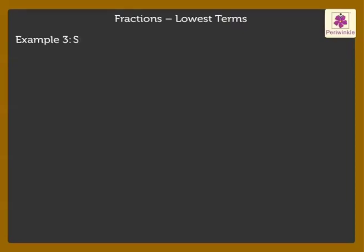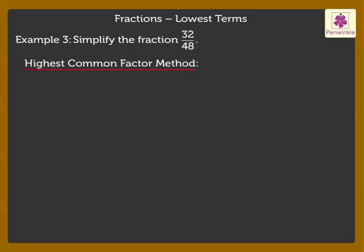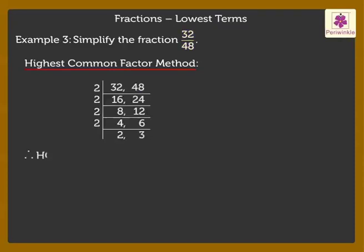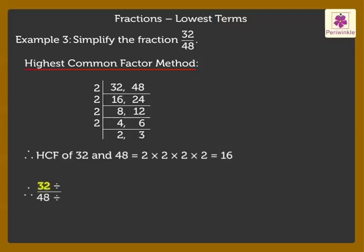Example 3: Simplify the fraction 32 upon 48. We will solve this by the HCF method. Firstly, find the HCF of the numbers 32 and 48. The HCF of 32 and 48 is 2 into 2 into 2 into 2, which is equal to 16. On dividing the numerator and the denominator by 16, we get the simplest form of the fraction, thus getting the required answer 2 upon 3.